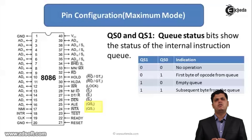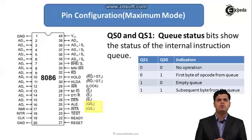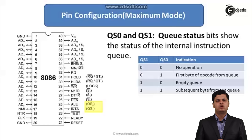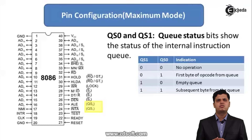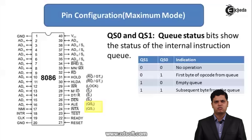In this lecture, we have discussed the pin configuration of 8086 in detail. We have seen the 40 pins of this microprocessor — starting from the address bus, ALE, the different interrupt signals, and then the pins in minimum mode and maximum mode. The functions of each and every pin have been covered in detail.